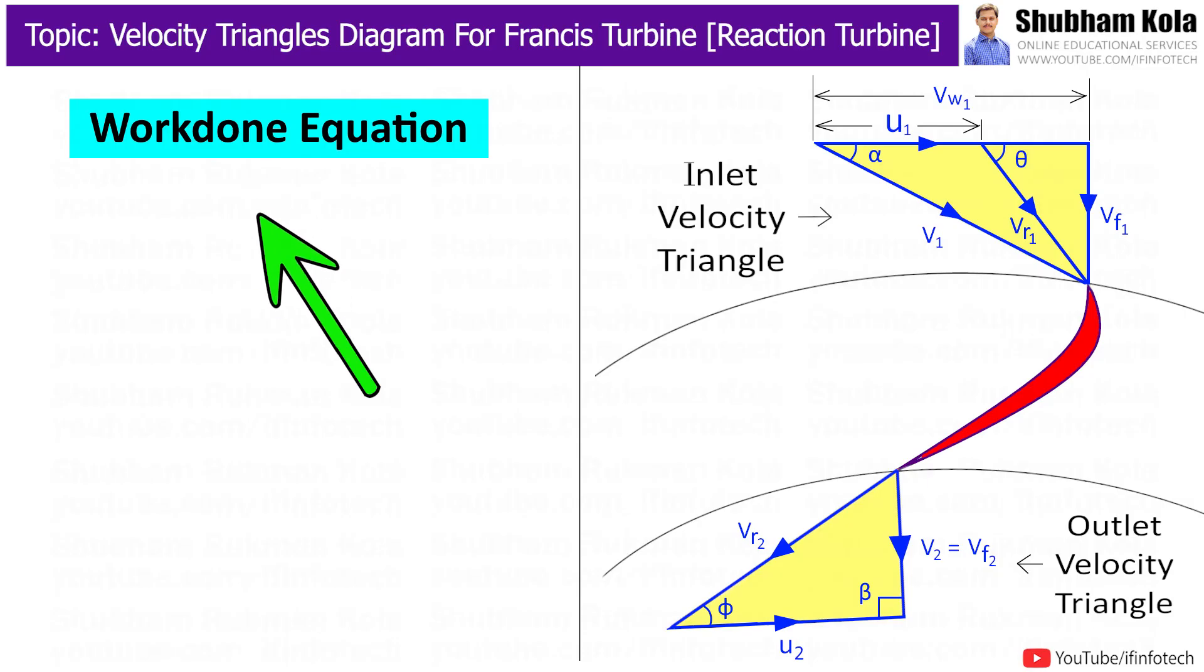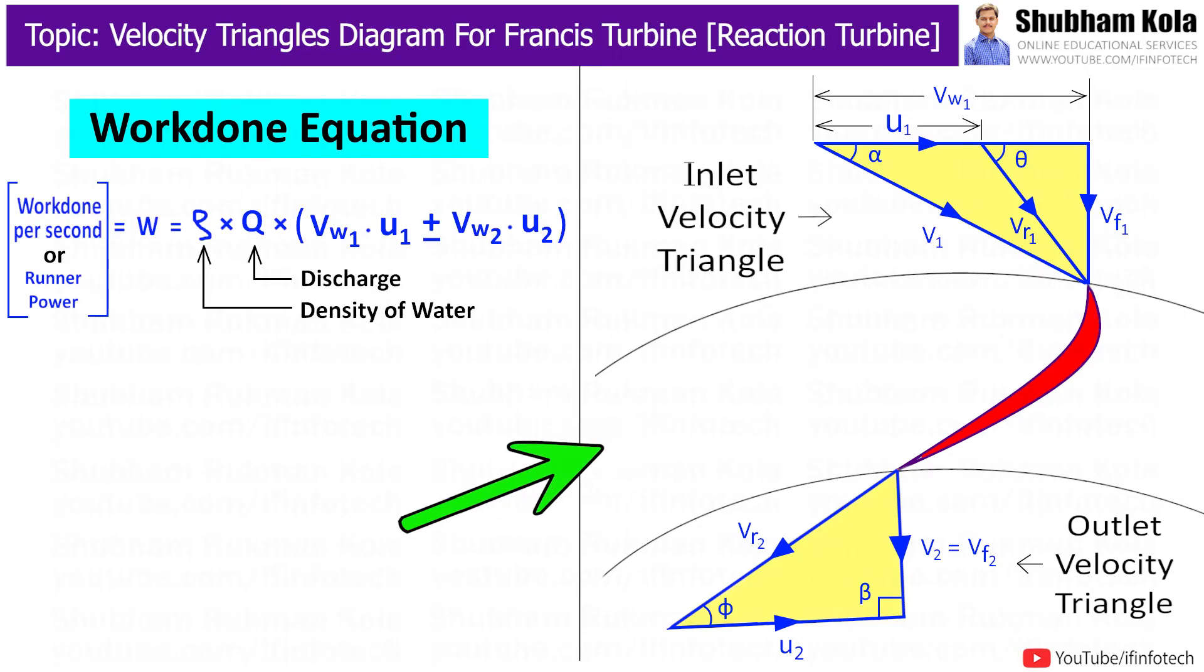Next we will move to the work done equation for Francis turbine. In case of Francis turbine, work done per second which can be written from Euler's momentum equation where q is discharge through runner in m3 per second which is area multiplied by velocity. Here positive sign is taken when beta is less than 90 degrees and negative sign is taken when beta is more than 90 degrees.